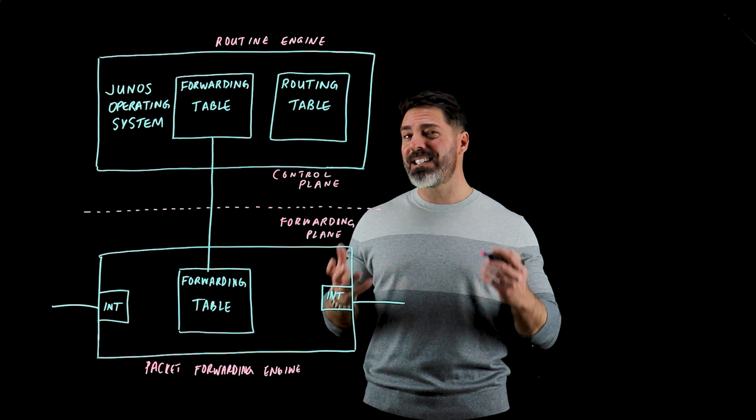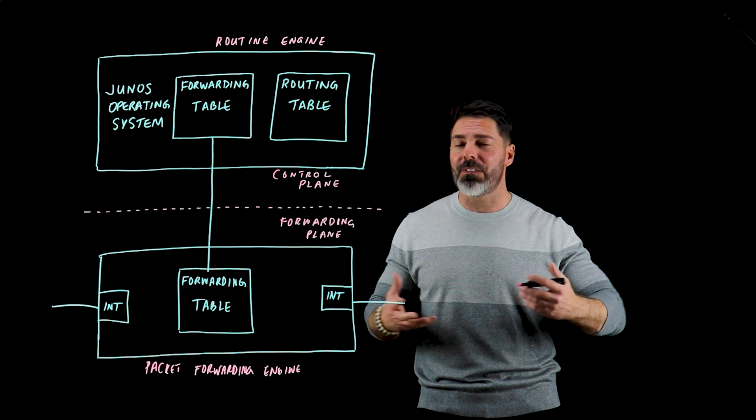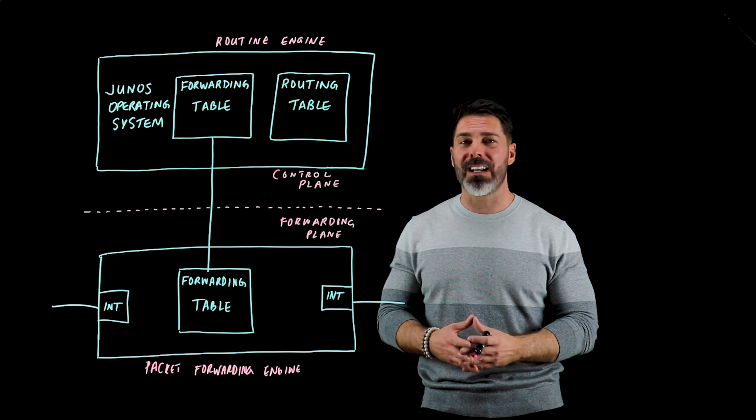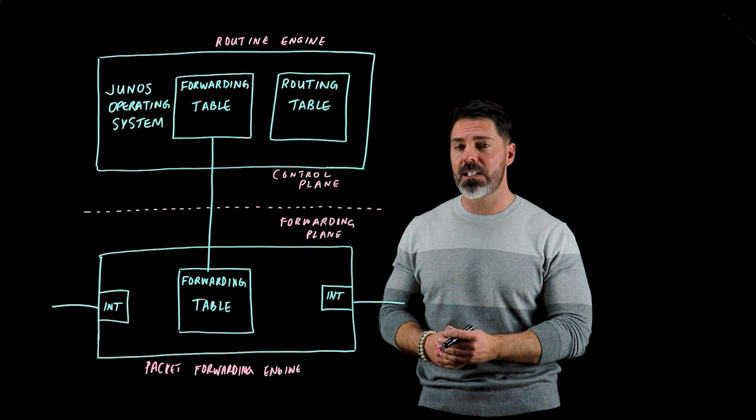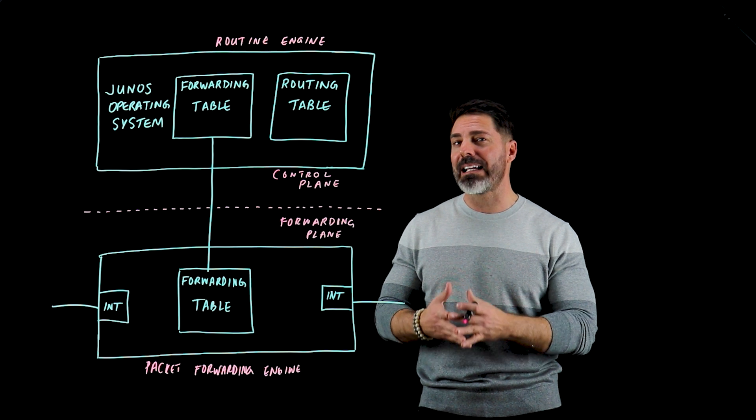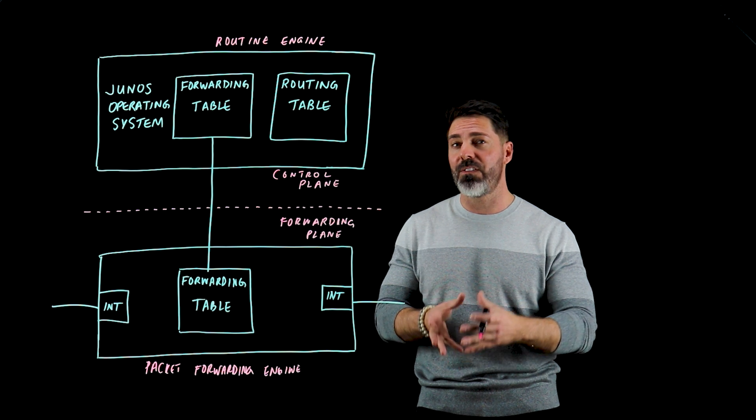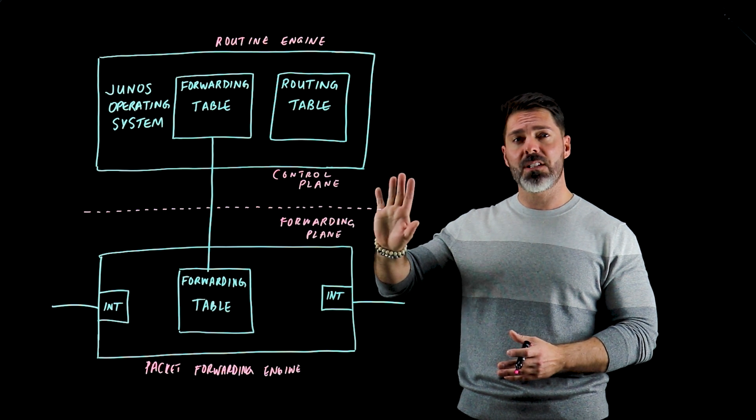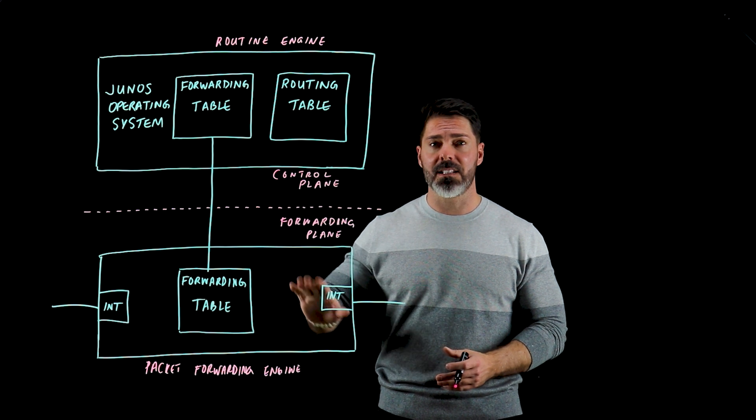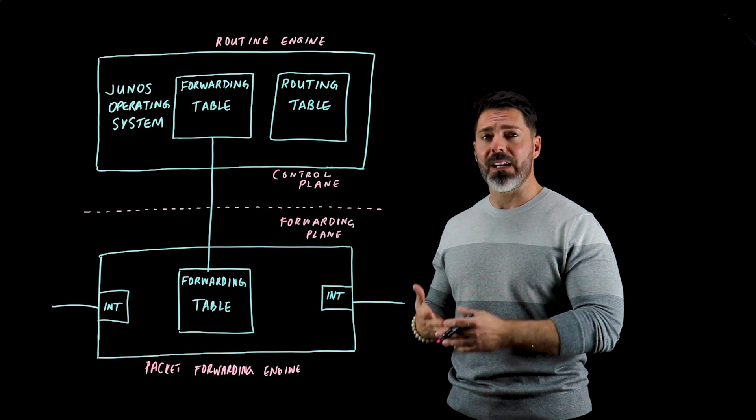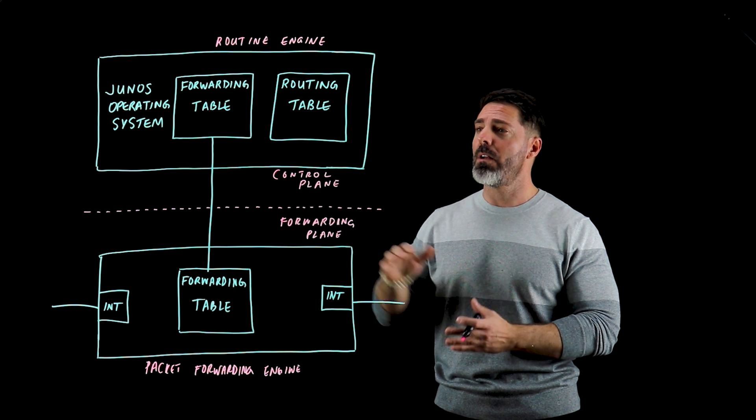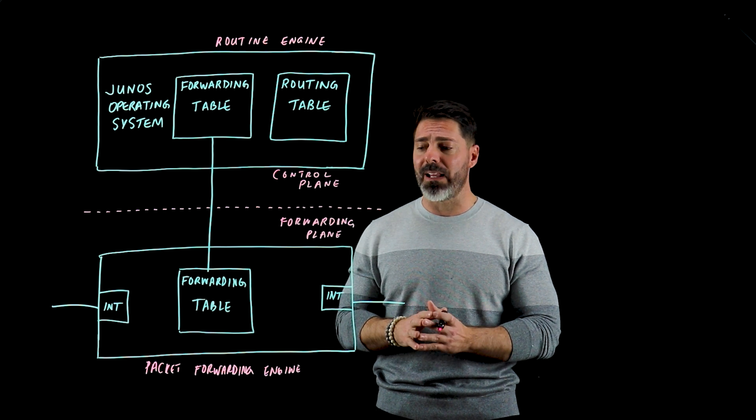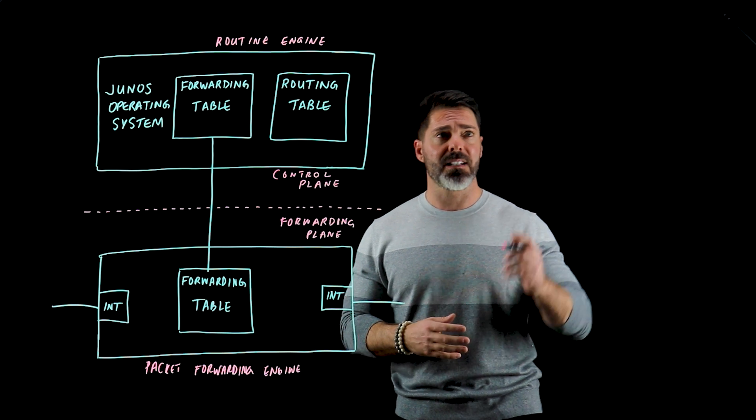Now this might not seem like a fundamentally different architecture if you look at most of the other router vendors that are out there, they all employ a very similar architecture to this. But if you think back to 1998 when the Juniper M40 flagship product was first released, this was the first time that any networking vendor had ever done this. Before Juniper introduced this clean separation between routing plane and forwarding plane, everybody was doing something that's known as process switching.